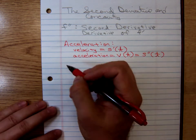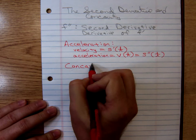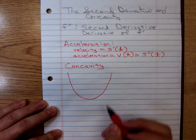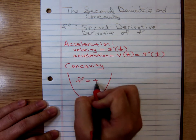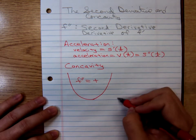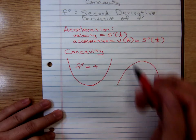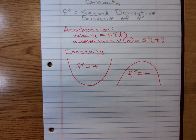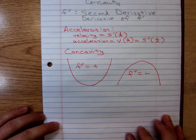And then we said concavity — that's where we spent most of our time last time. If a graph is concave upward on an interval, its second derivative is positive. And if a graph is concave downward on an interval, then we expect its second derivative to be negative. We did some concavity problems in class.